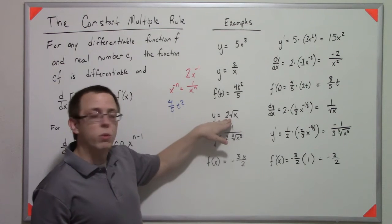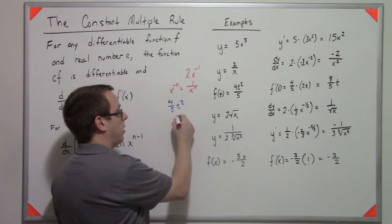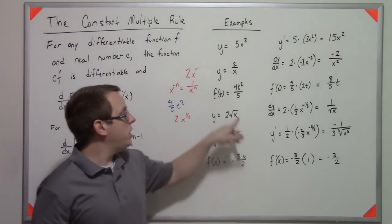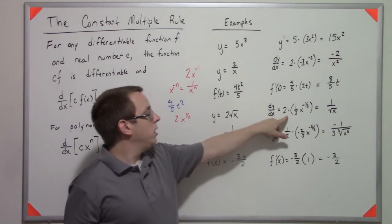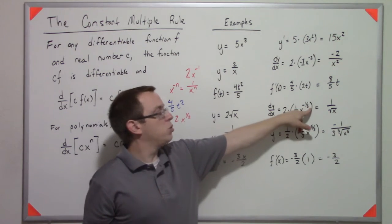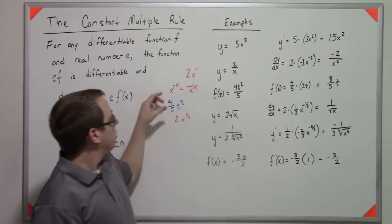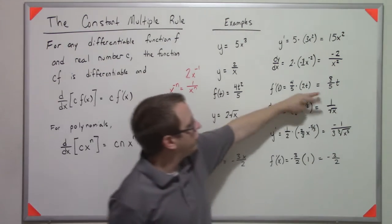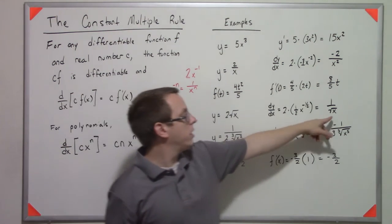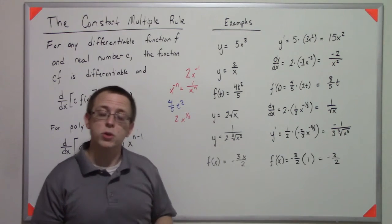As we keep going, we have 2 square root of x. Remember that the square root can be written as x to the 1 half. So dy dx here is 2 times, bring down that power, 1 half, subtract 1 from 1 half, you get negative 1 half. So then we use this result to flip it, and the fact that x to the 1 half is the square root of x. Those cancel, and we're left with 1 over the square root of x.